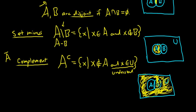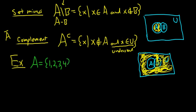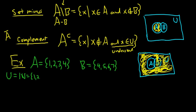Let's do a simple example of set operations. We have A = {1, 2, 3, 4} and B = {4, 5, 6, 7}. The universe of discourse here is the set of natural numbers, so it's 1, 2, 3, and so on. In this case, it's important to mention the universe of discourse so we know what's going on.